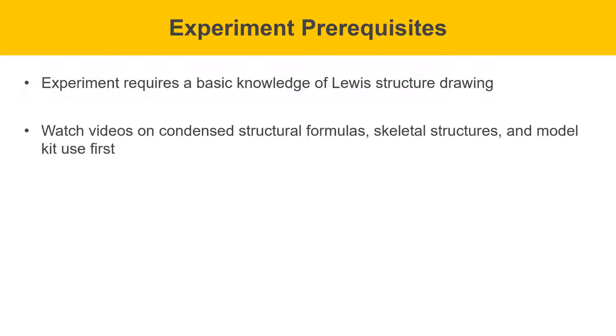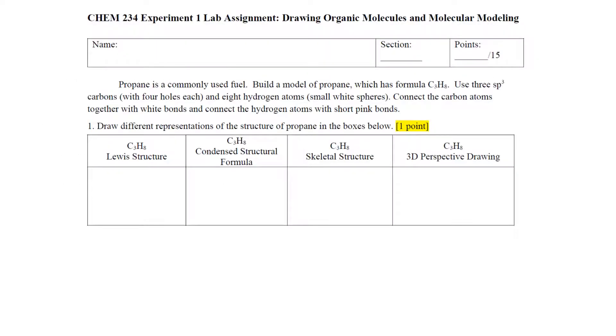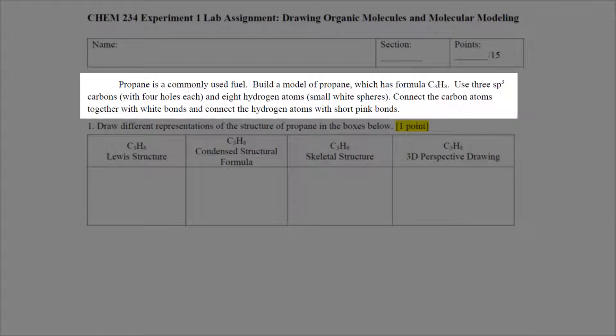Finally, the way the experiment's going to work is it's essentially a worksheet that we'll work through and answer the questions as we go along. This experiment starts out with propane. Propane is a commonly used fuel. Build a model of propane, which has formula C3H8.